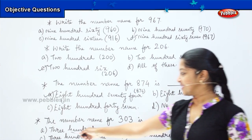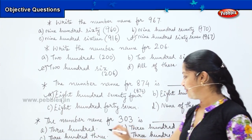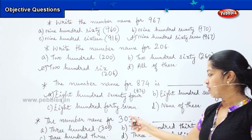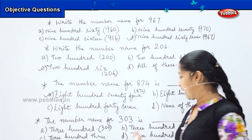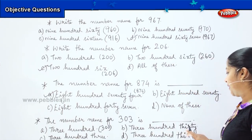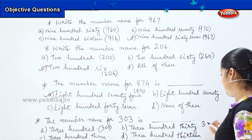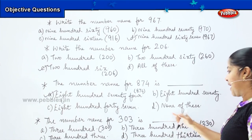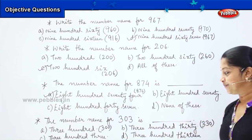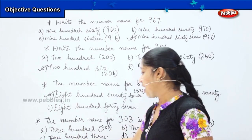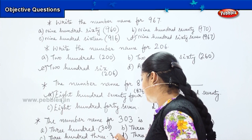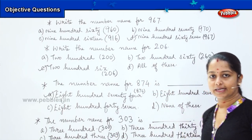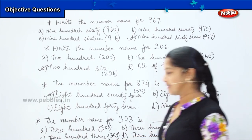The first option says 300. How will you write 300? It's 3-0-0. This option does not match my question. Coming to option B, it's 330 — how will I write it? 3-3-0. Coming to option C, three hundred three, which is 3-0-3. I got my answer correct. So option C is my right answer.